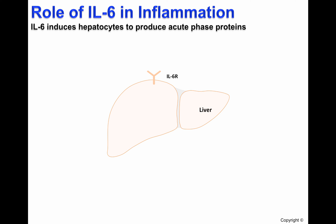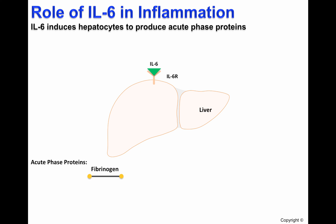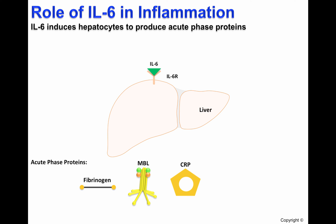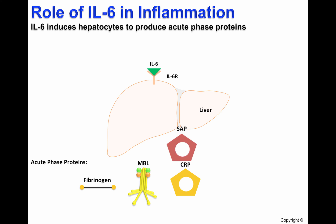IL-6 is produced mainly by macrophages during infection and can be released systemically. IL-6 will activate hepatocytes to produce and release several acute phase proteins. One of these is fibrinogen, which participates in coagulation to trap pathogens. Some acute phase proteins are part of the complement system, like MBL. Also, C-reactive protein is produced, which helps in the process of opsonization and classical pathway activation. C-reactive protein is the most important marker for the inflammatory response, such as in bacterial infections. Lastly, serum amyloid protein is produced, which is also an opsonin.